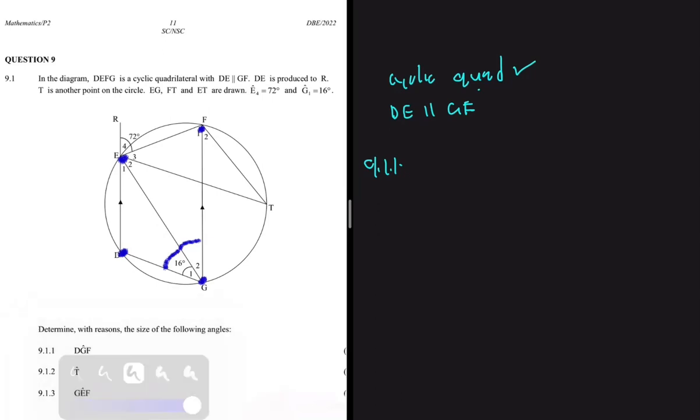Because an exterior angle of a cyclic quad is equal to interior opposite, so we're going to see that angle DGF is equal to E4.